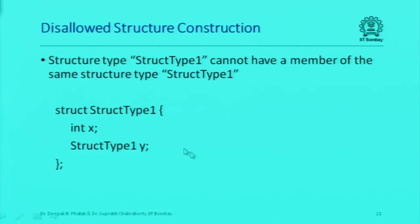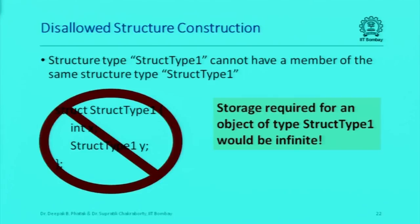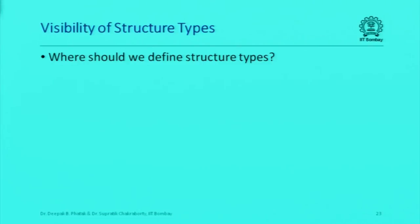Plus the storage required for member y, but member y is of type struct type 1, so that itself requires an integer and another member y, which itself requires an integer and another member y — and that would go on forever. This leads to an infinite amount of storage being required for a single object of type struct type 1. C++ disallows this because you cannot have infinite storage for an object on your computer.